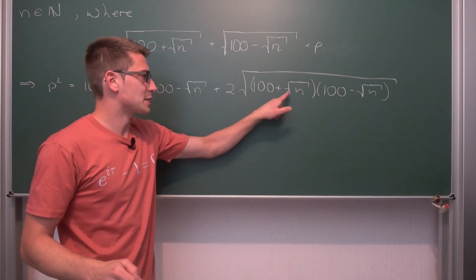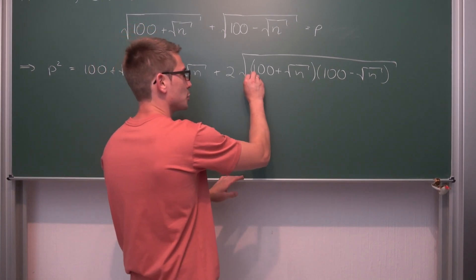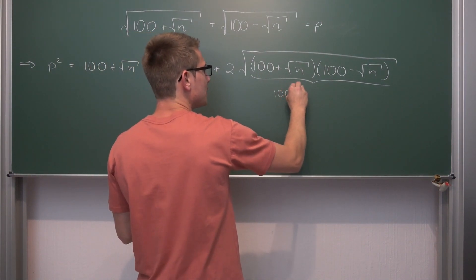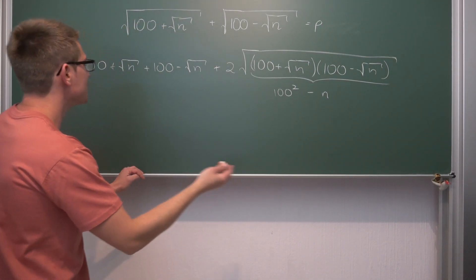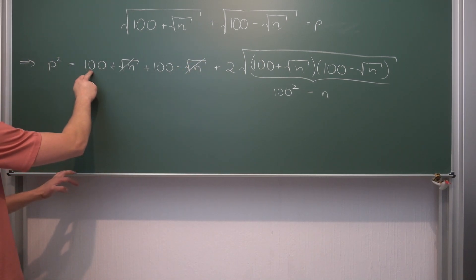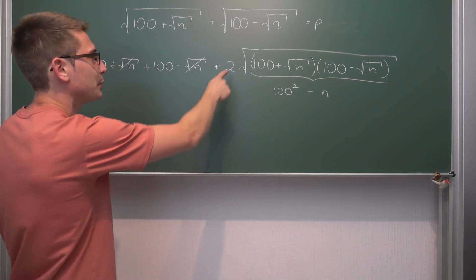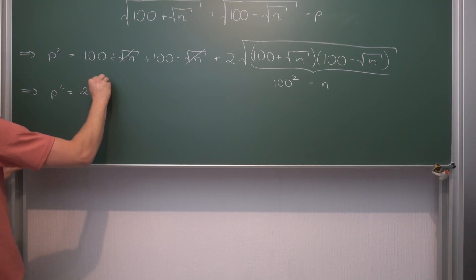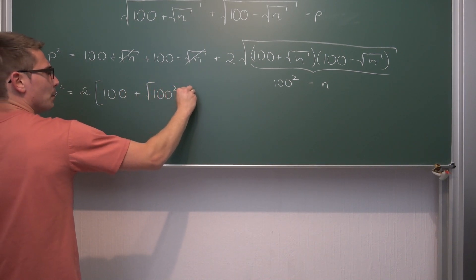Now we have (a+b)(a−b), which is the difference of two squares — the third binomial formula. That gives 100² minus n. Bringing things together, the √n terms cancel, 100+100 = 200, and we can factor out 2 as a common factor. So p² equals 2 times (100 + √(100²−n)).